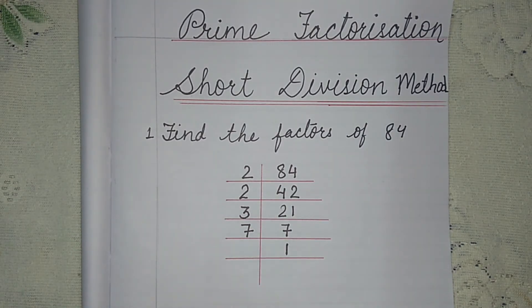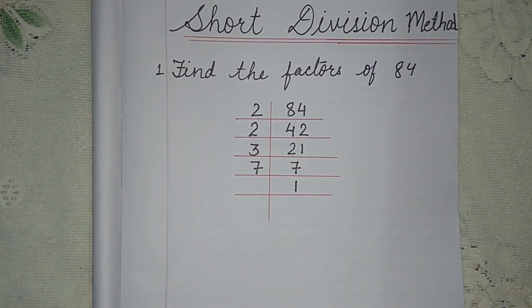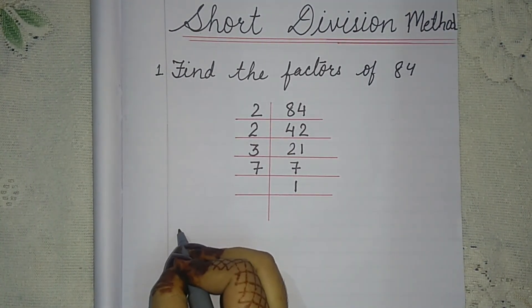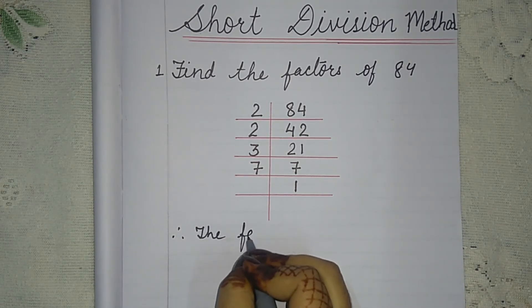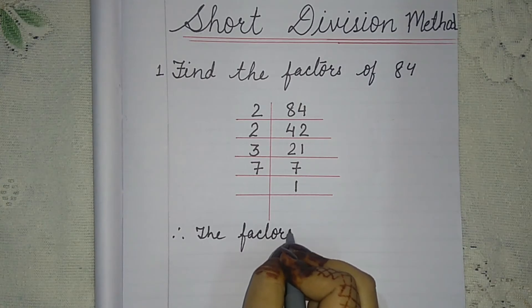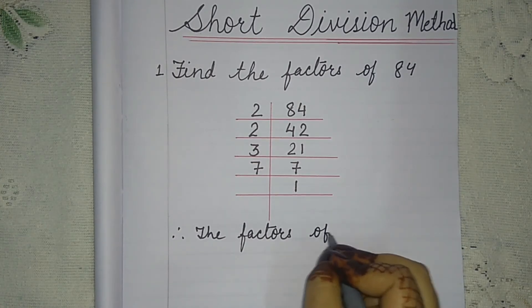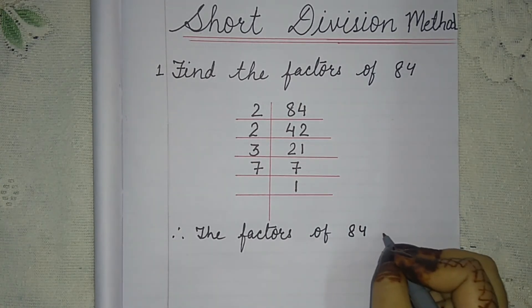So what answers have we got? Therefore, the factors of 84 are...